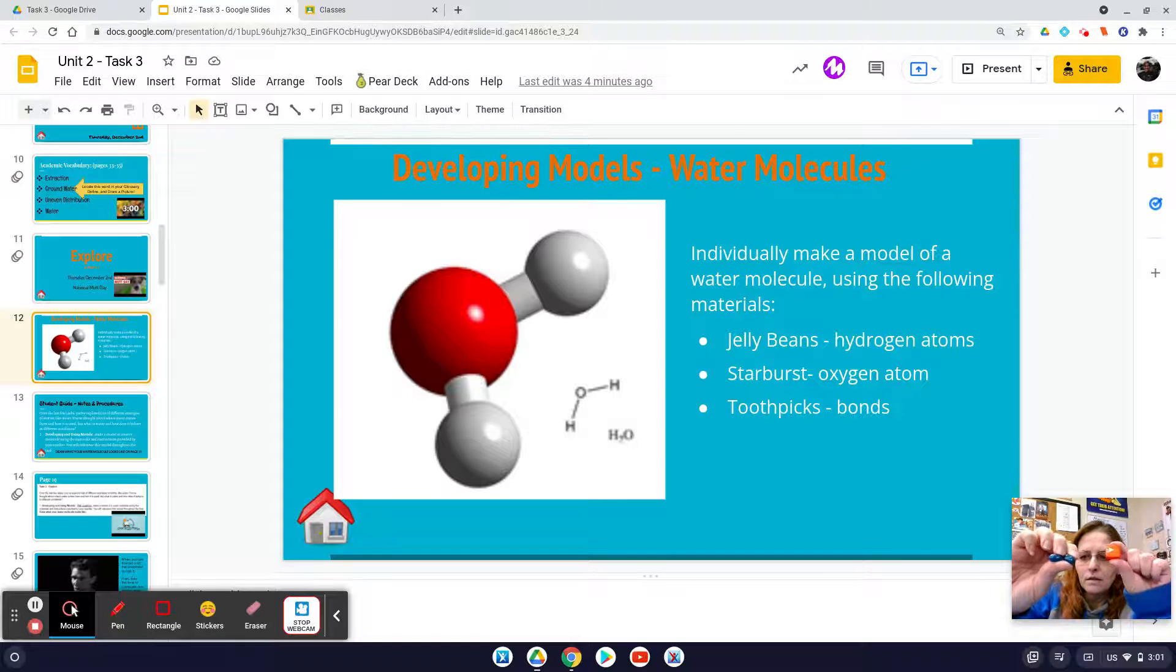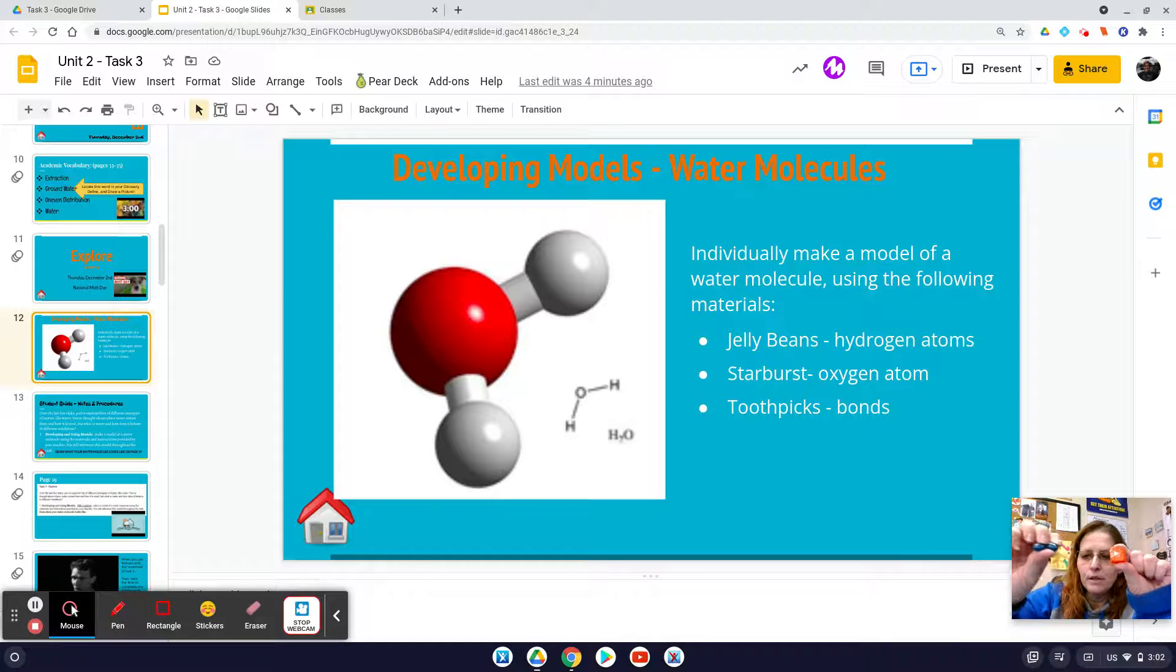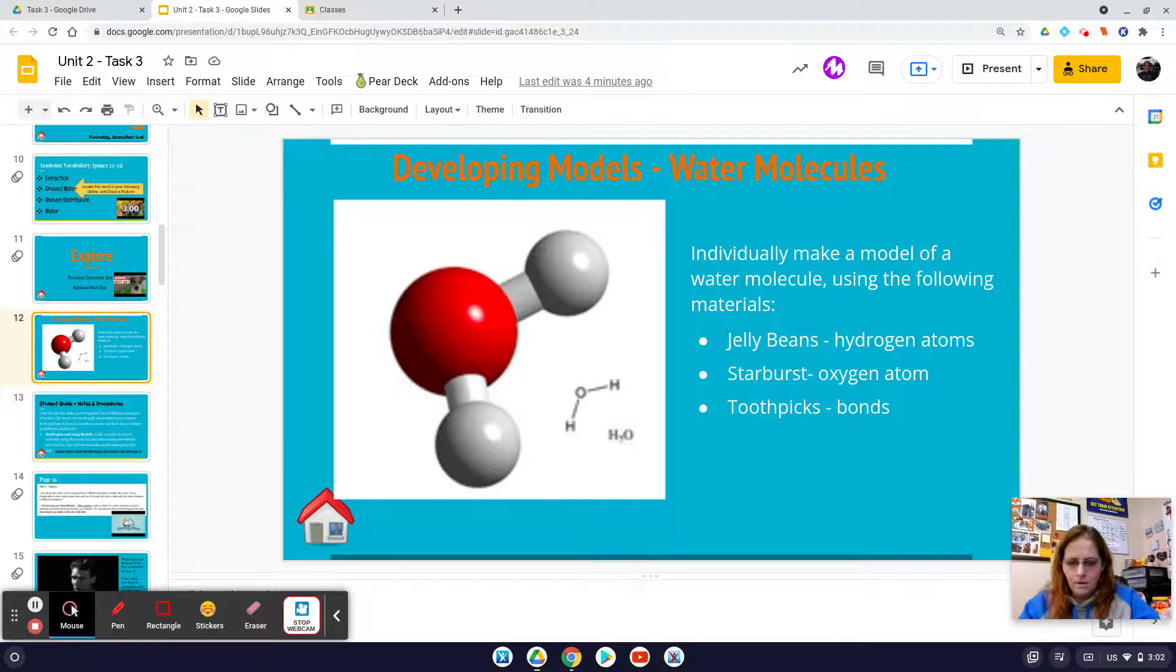So this is what each group needs. Maybe the guest teacher was kind enough to separate them by colors to make it easier for you. Each person in the group gets one starburst and two jelly beans. So if the Materials Manager says they need a certain number, that's two jelly beans per person in their group.